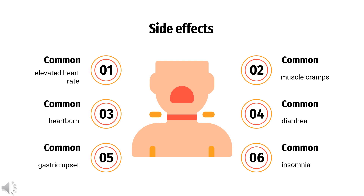Symptoms of overdose in particular include collapse into a seizure, chest pain as a possible precursor of a heart attack, fast or pounding heartbeat which may cause raised blood pressure, hypertension, irregular heartbeat, and cardiac arrhythmia.